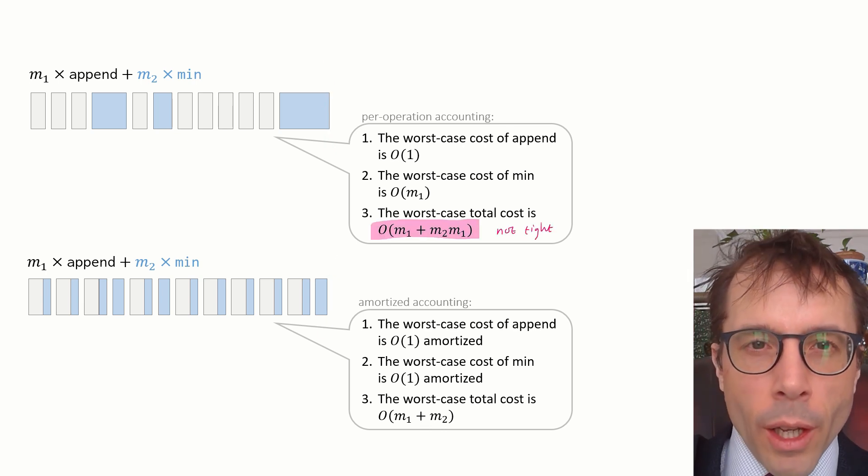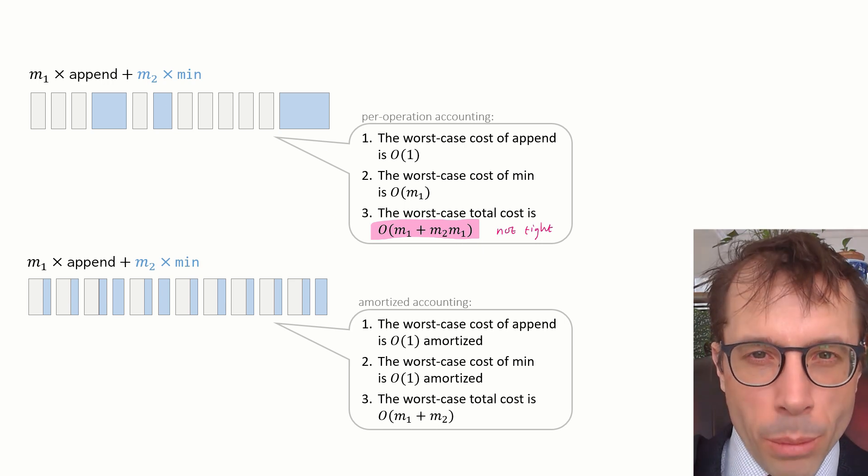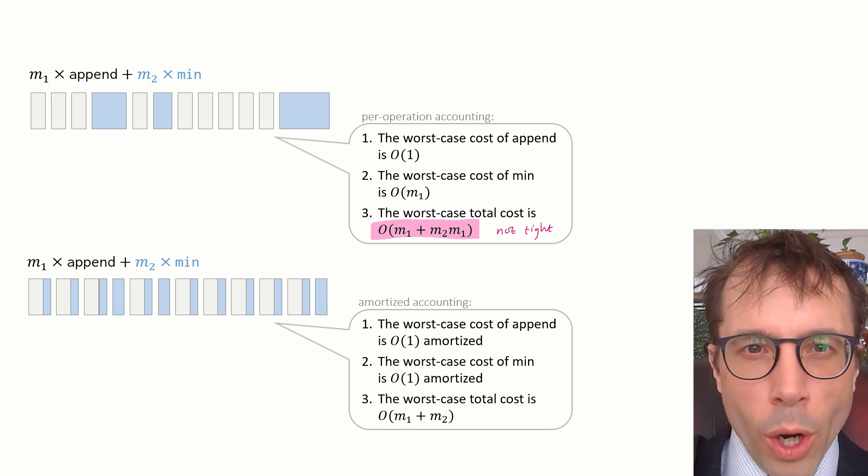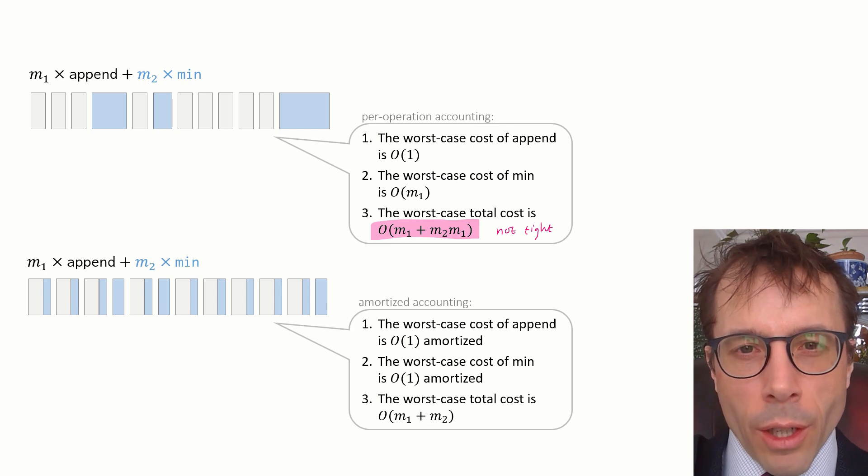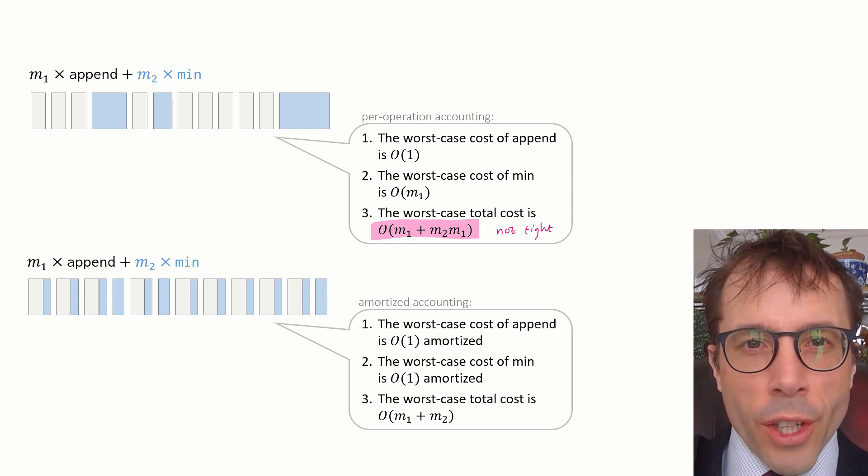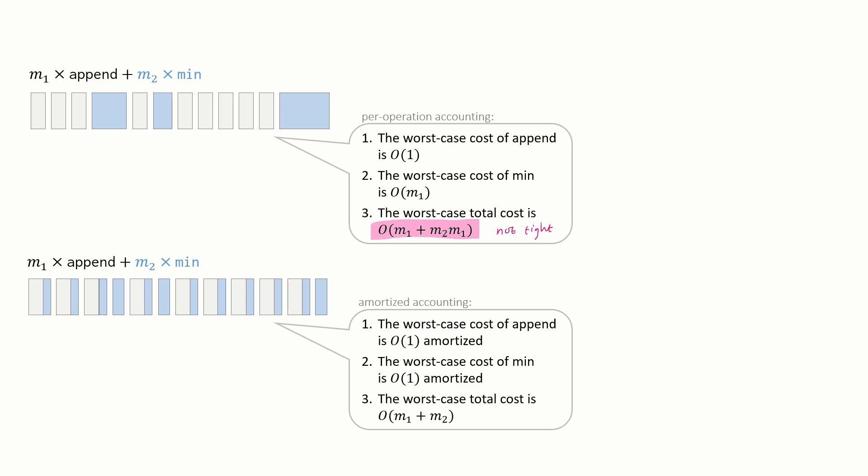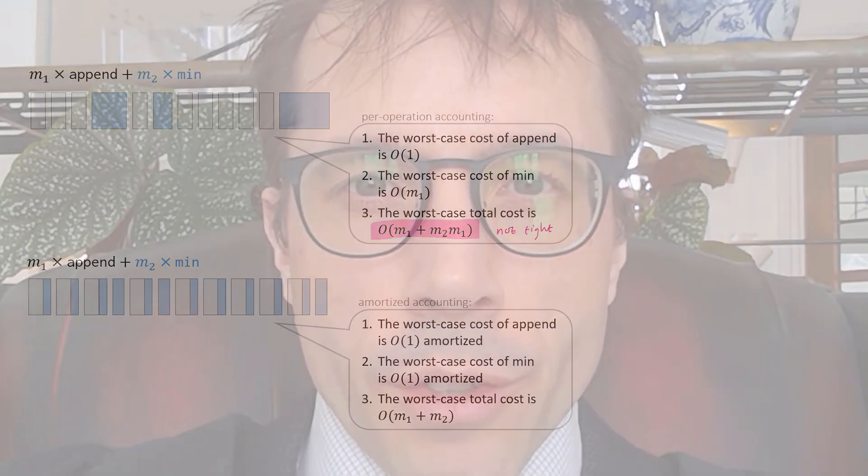And what you see is that the big O bound we get from the simple per operation accounting is worse than what we got from the amortized accounting. The per operation accounting did not give us a tight bound. So that's why we do amortized accounting. It's meant to be an easier way to get tight bounds for aggregate costs. And as we said when we talked about the hare and the tortoise, it's aggregate costs that matter and the tighter the bound the more useful it is.